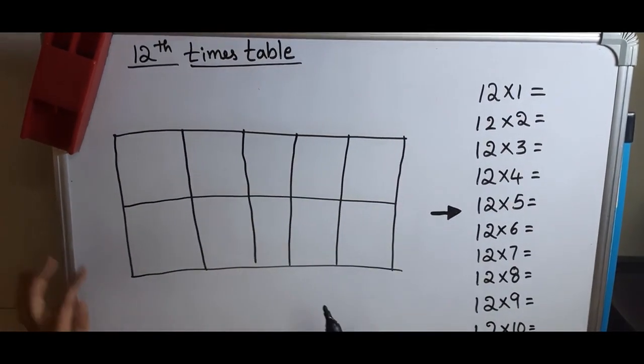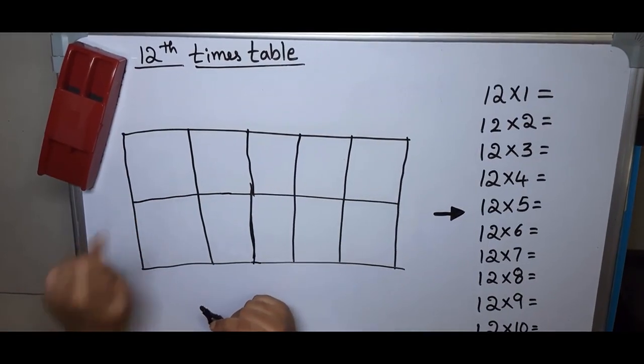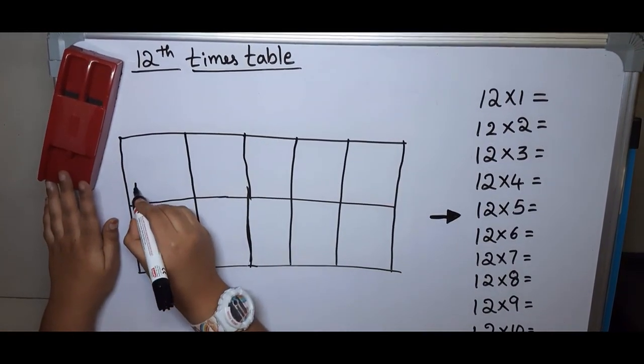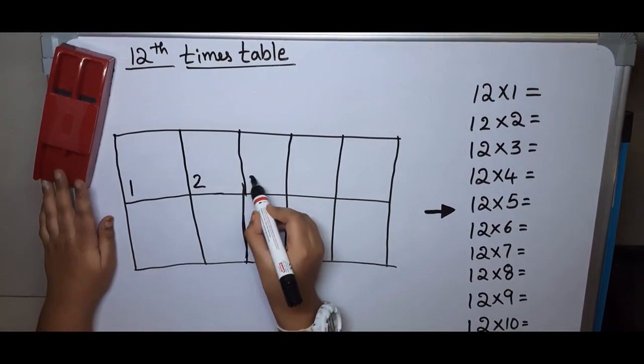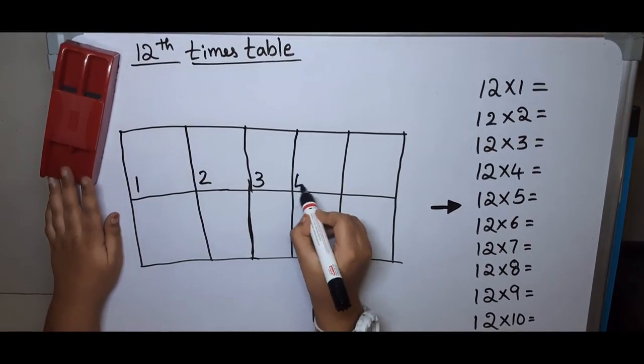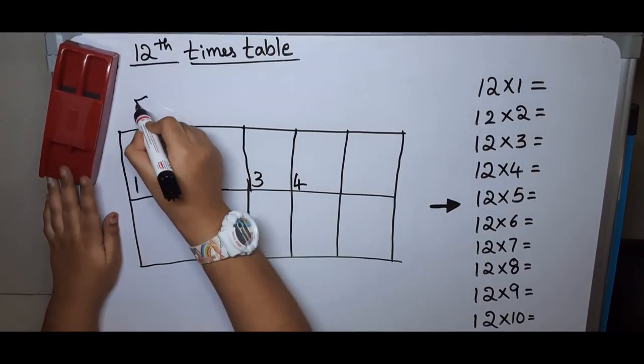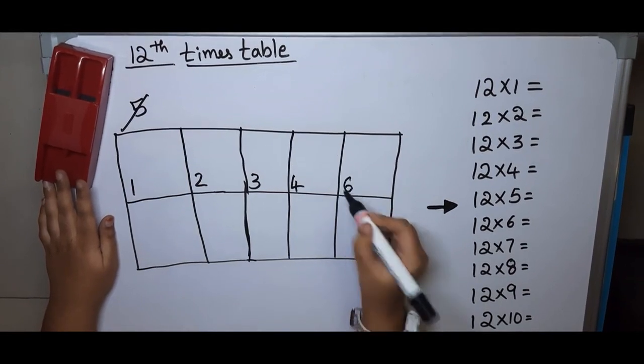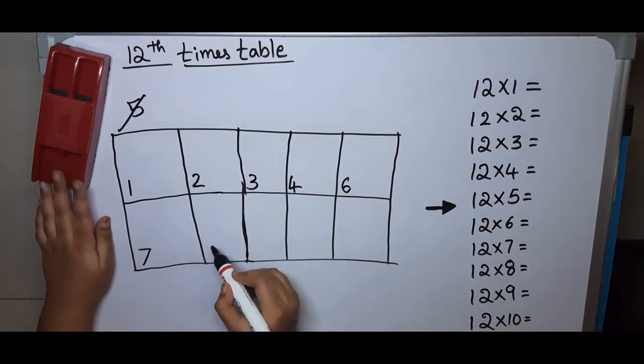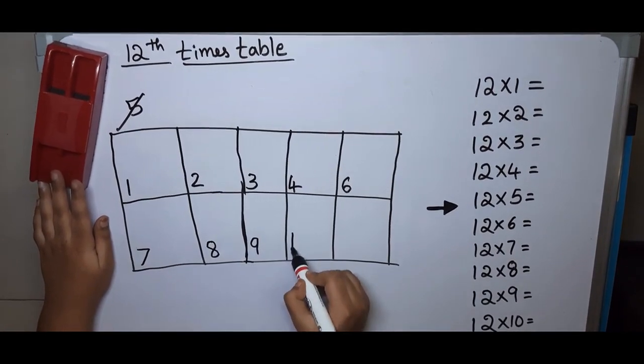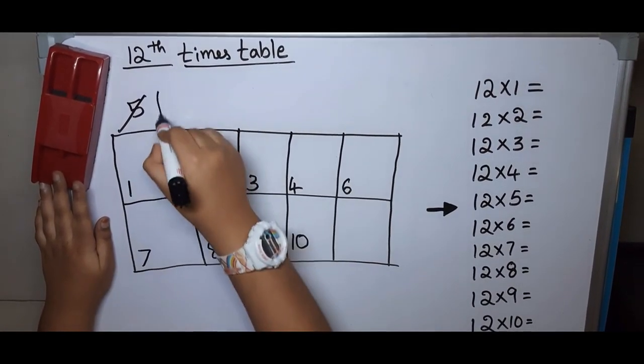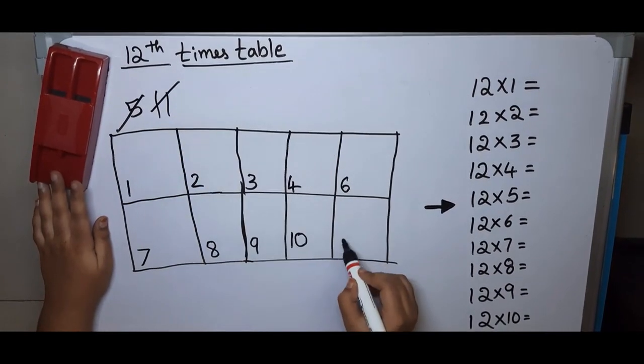Okay, now start with this corner: one, two, three, four, five, skip, six, seven, eight, nine, ten, eleven, skip, twelve.